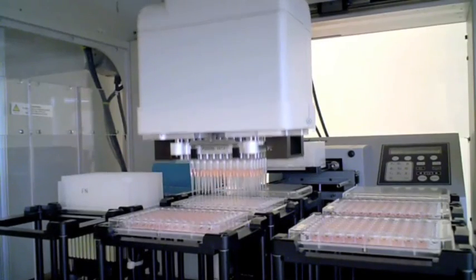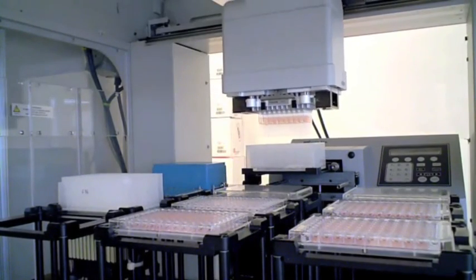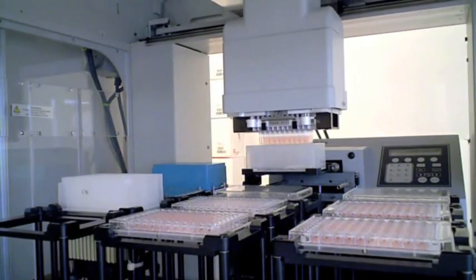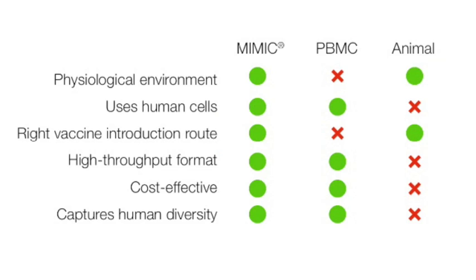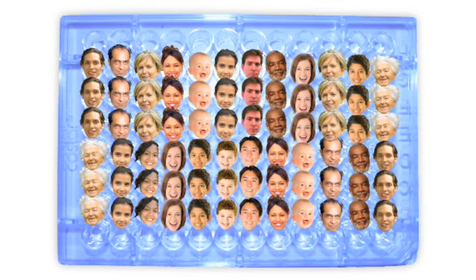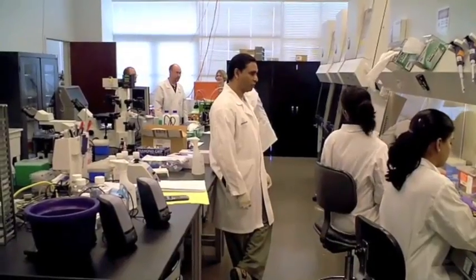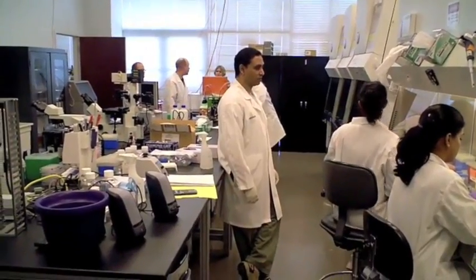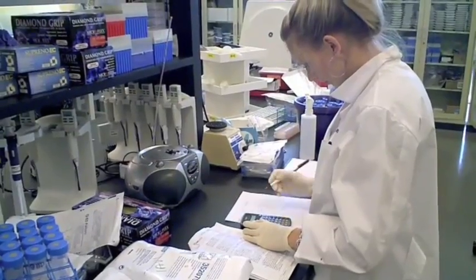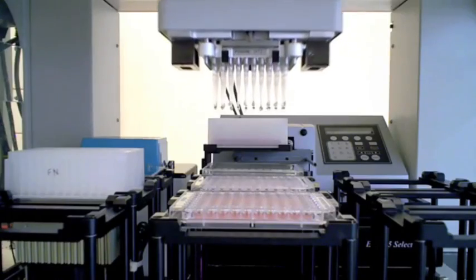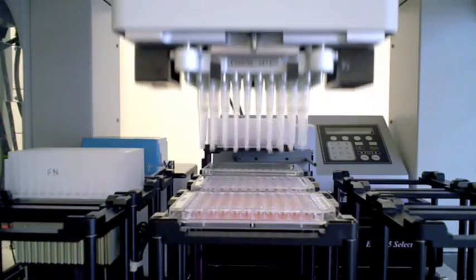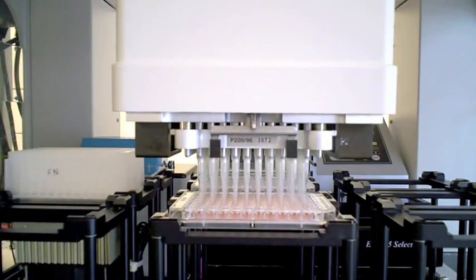Our clinical trial in a test tube mirrors the human immune system more closely than any other model available. The MIMIC System simulates biological efficacy of an immunotherapy or vaccine on human population subgroups rapidly and consistently. These results enable the design of more rapid and incisive clinical trials, potentially reducing the time and cost to produce new drugs and vaccines.